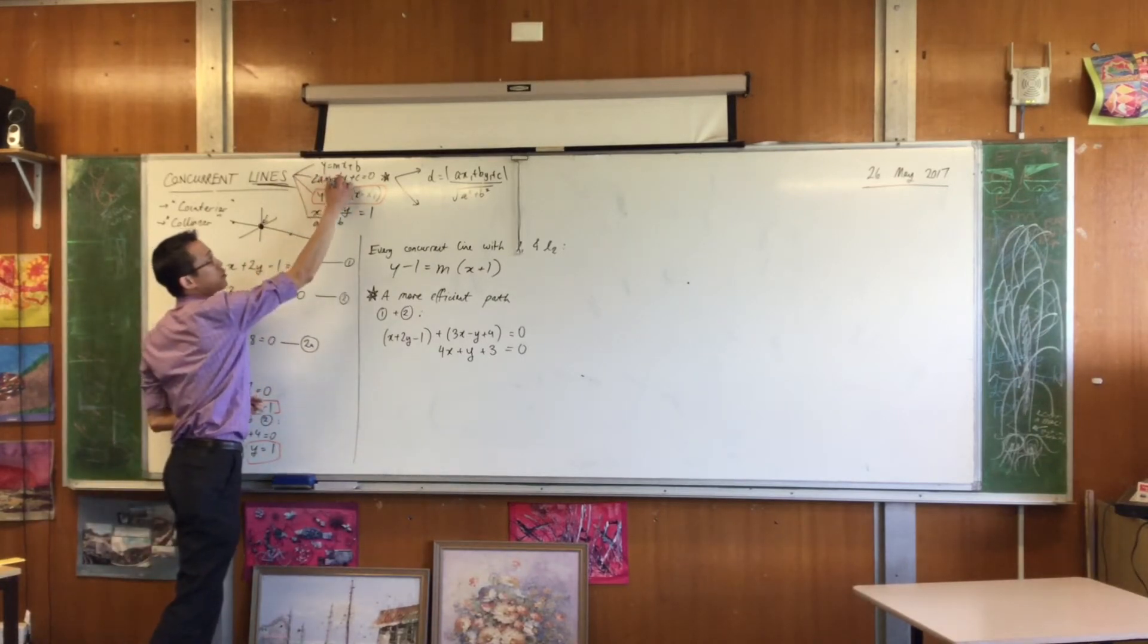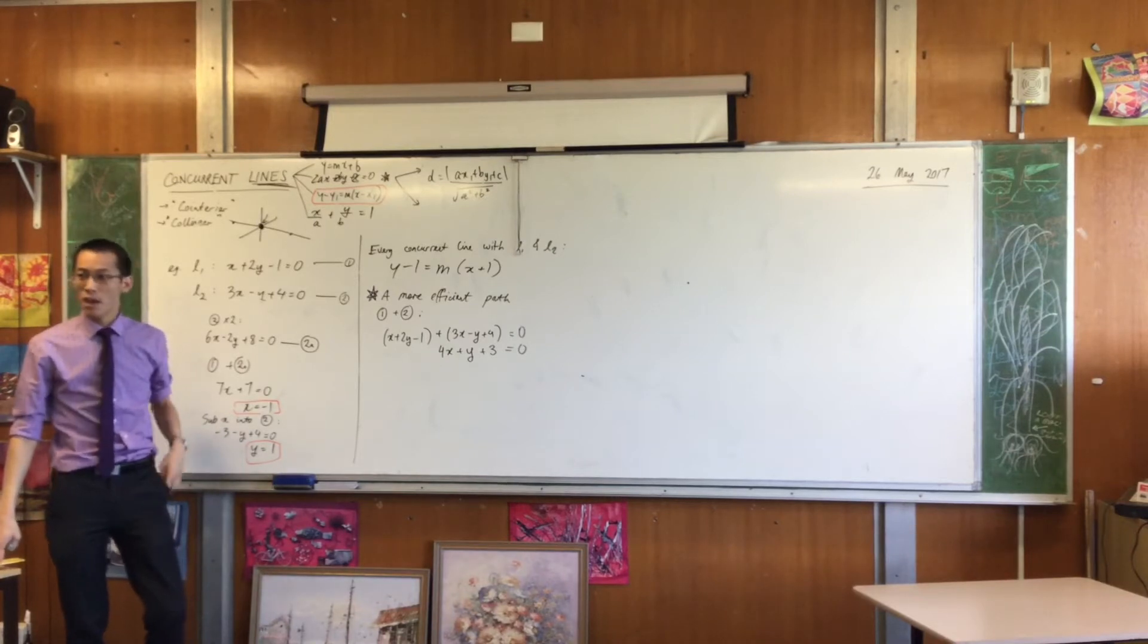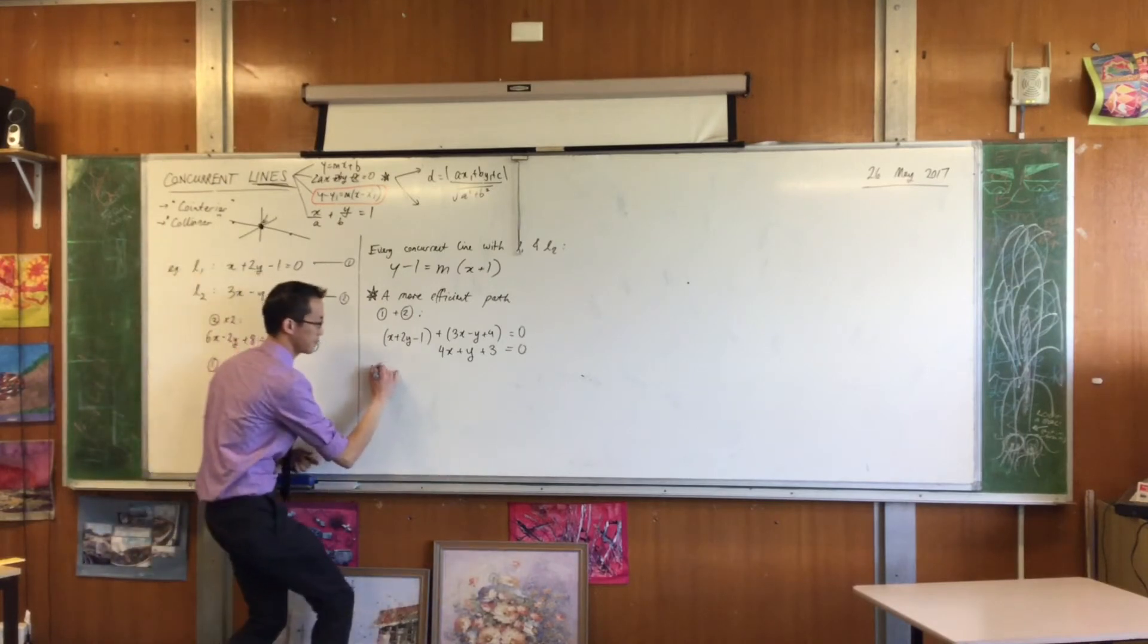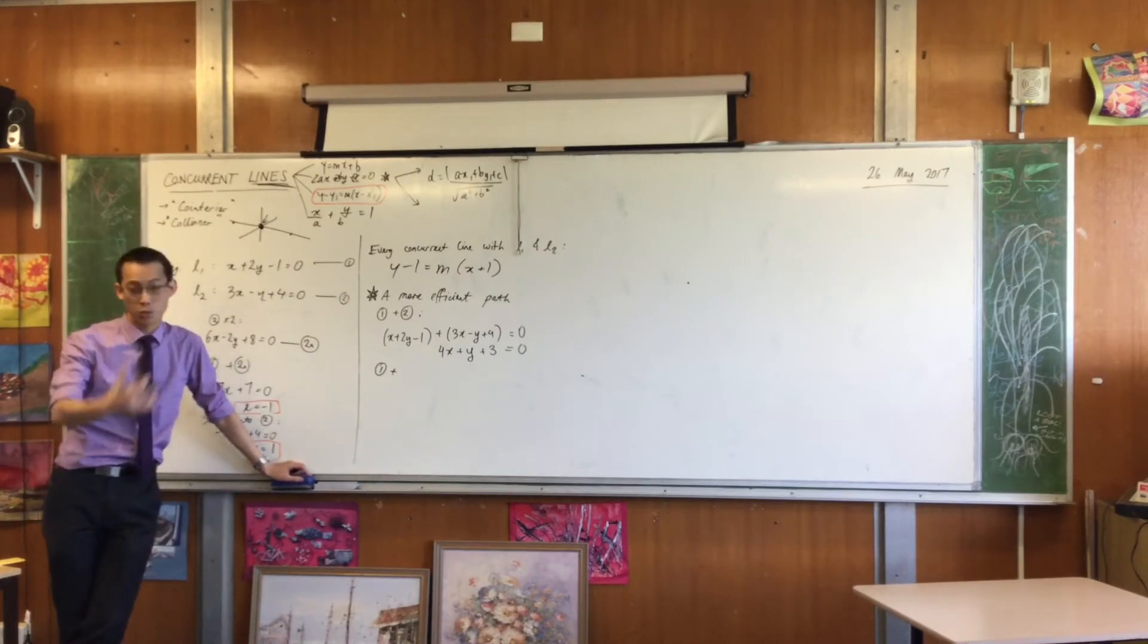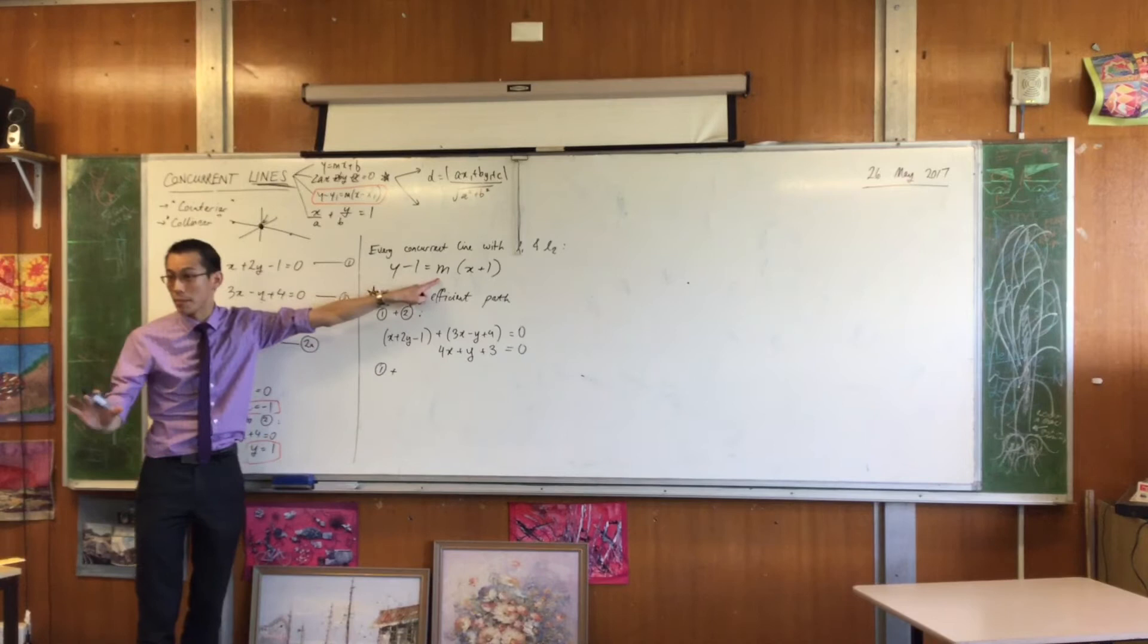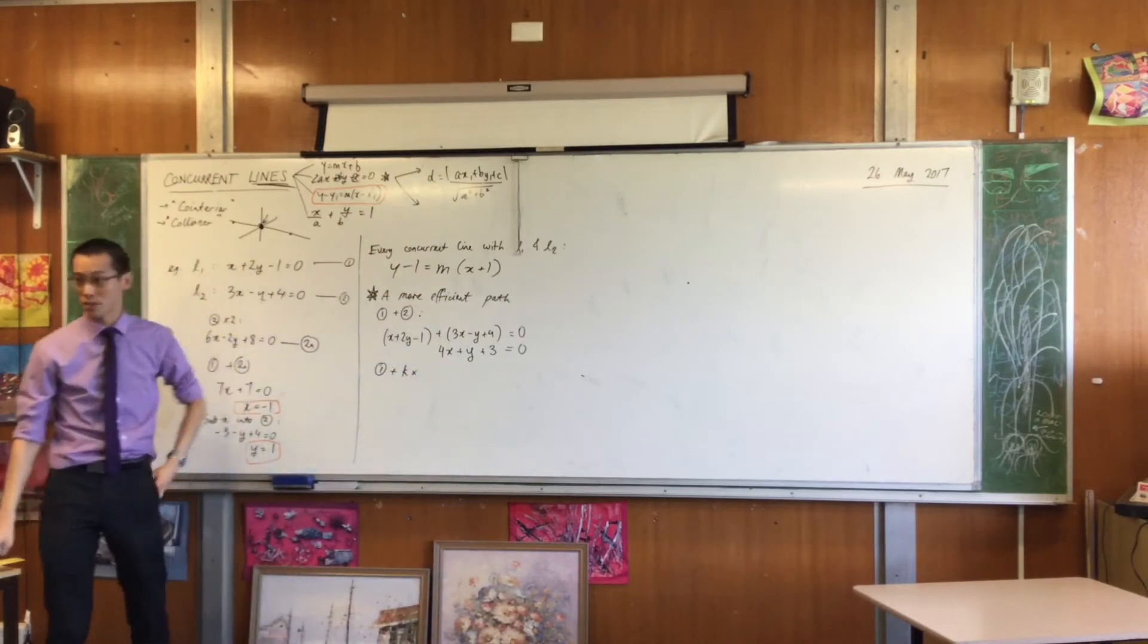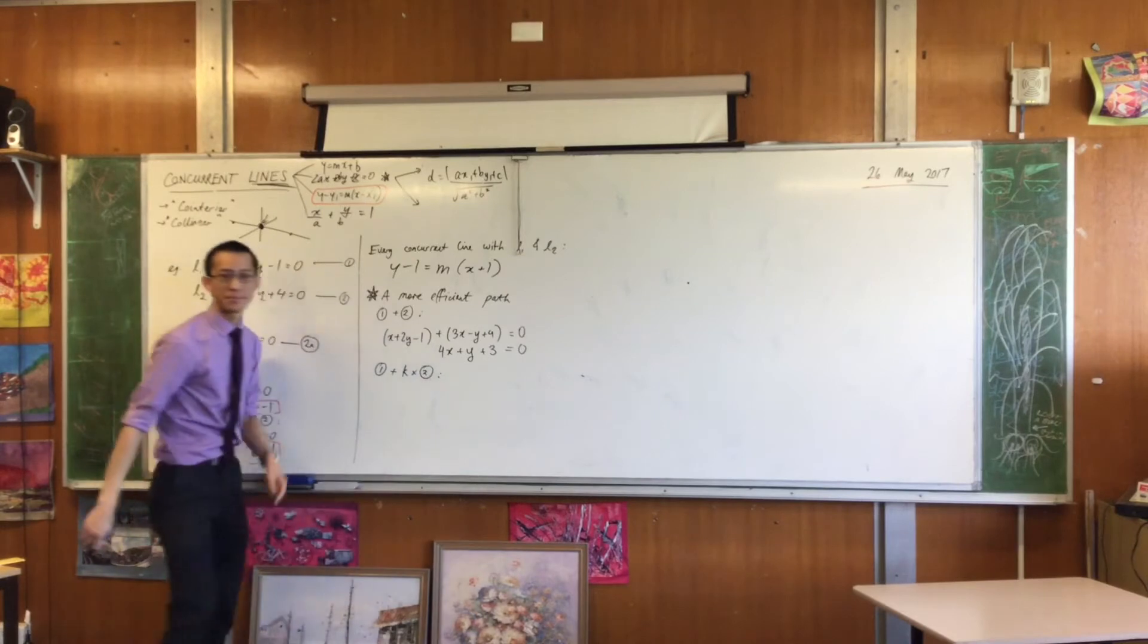I could have 2ax plus 2by plus 2c, and the right-hand side would still be 0. Do you agree? Same line, haven't done any violence to it. That means when I do this, right? Instead of doing this, I'm not just going to add equation 2. I'm going to add a multiple of equation 2. See what happens. I need to choose a letter to be my multiple. And I want it to be anything, because I know the line can be anything. So I'm going to choose the letter k. k is a pretty common choice for a constant. So I want k lots of that equation. Okay?